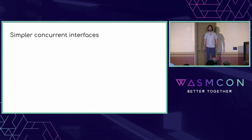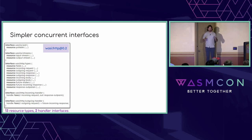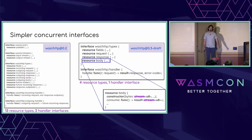Also in WASI 0.3, we want to simplify concurrent interfaces. As a concrete example: in WASI 0.2, HTTP needs 13 resource types and two handler interfaces. There are two stream types with directionality — input stream and output stream — which infects all the types that use them, so we have incoming and outgoing requests and responses bubbling up to the handler interfaces, plus resources that emulate futures. But in WASI 0.3, I can have just four resource types — the obvious ones from the HTTP domain: fields, requests, response, and body — and one handler function which takes a request and returns a response. The magic is in the resource body whose constructor takes a stream and whose consume method returns a stream.